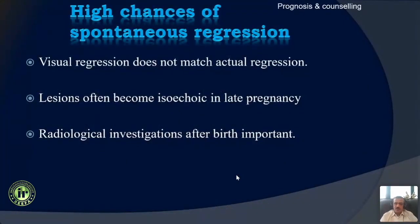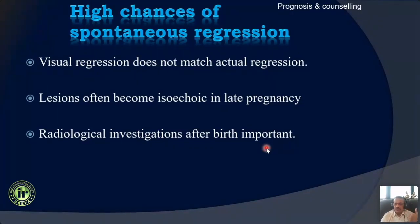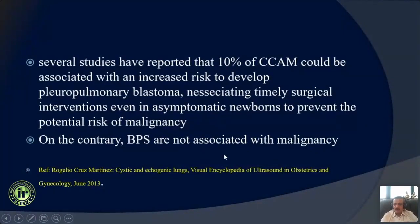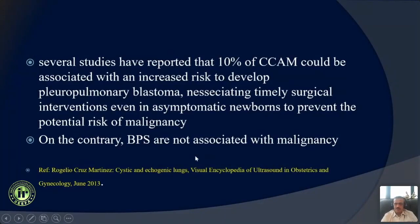A very important message: even if you see the lesion regressing in the third trimester, this does not reflect actual regression, because many of these lesions become isoechoic in late pregnancy and may be difficult to detect. Therefore it is very important to investigate after birth. Some clinicians do a CT scan in almost all patients; others do it only if the newborn is symptomatic. If the newborn is symptomatic, a CT scan should definitely be done, as the lesion will not be easily seen on X-ray or ultrasound. Also, when counseling, almost 10% of CPAMs can potentially develop pleuropulmonary blastomas — this must be kept in mind. This is relevant to CPAMs and not so much to sequestration.